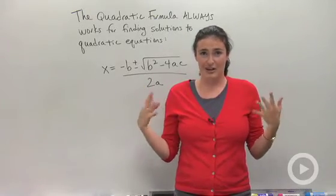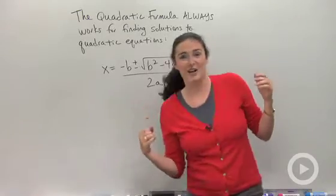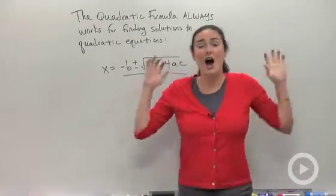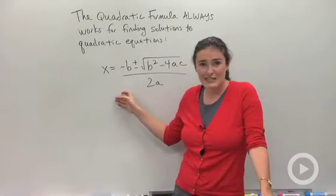I'm going to do it one more time just so you guys are annoyed and it starts going through your head. Here we go. X equals negative b plus or minus square root of b squared minus 4ac all over 2a. Okay, yeah. So that's pretty good. You'll be singing that in your sleep.